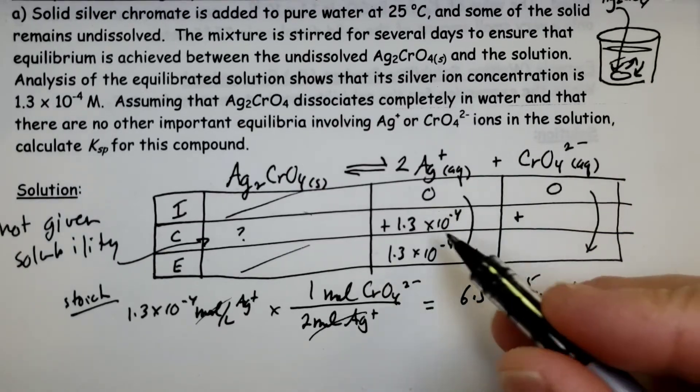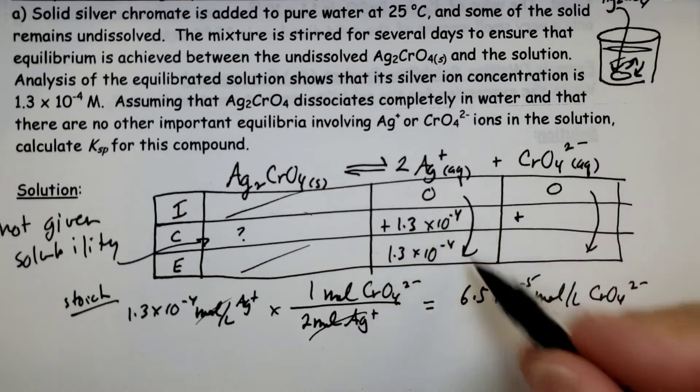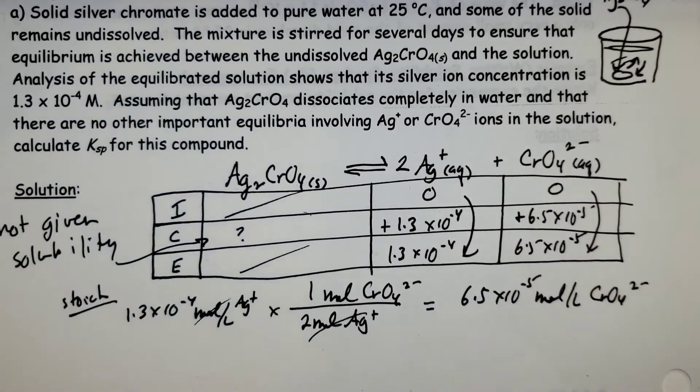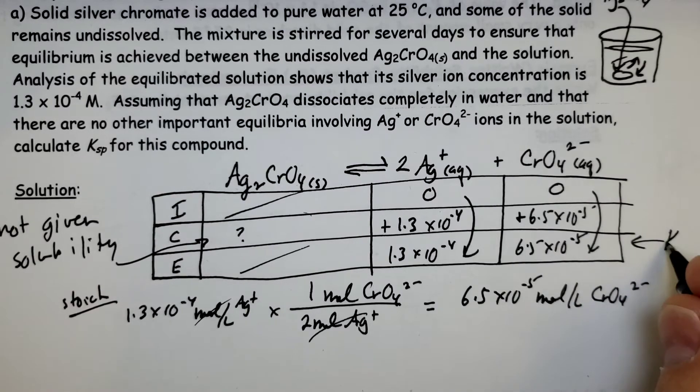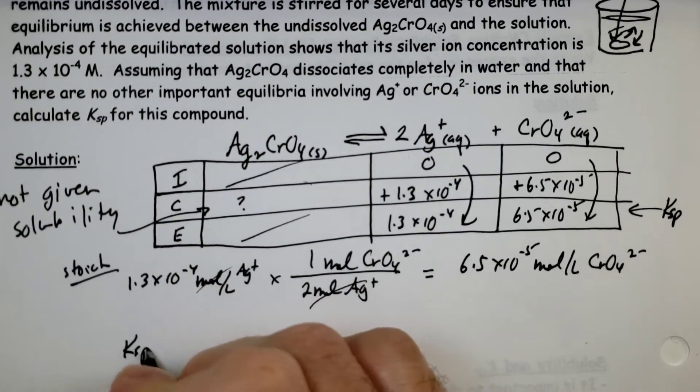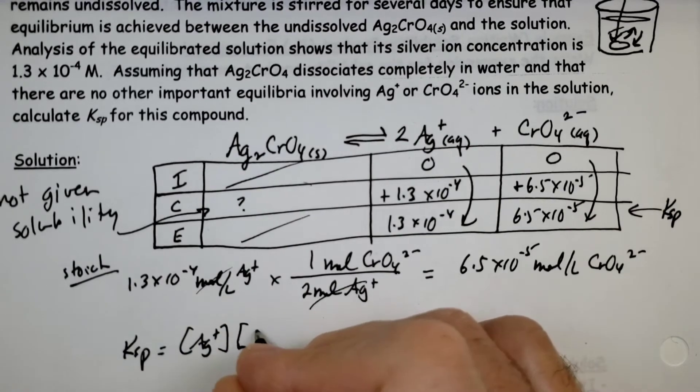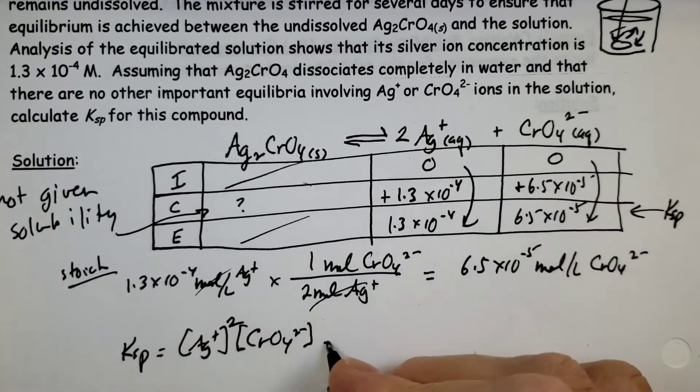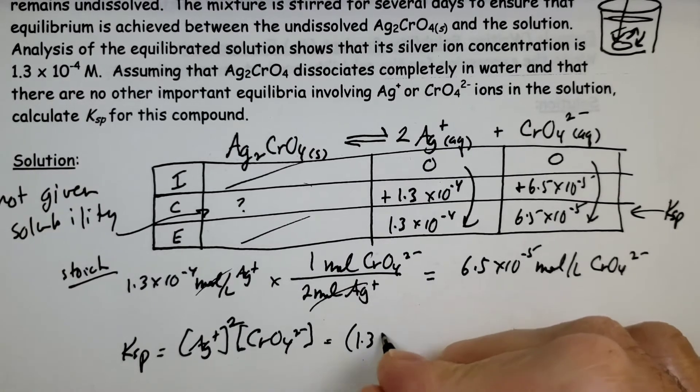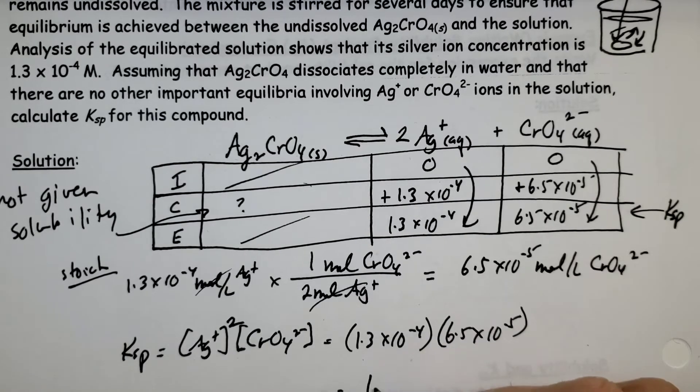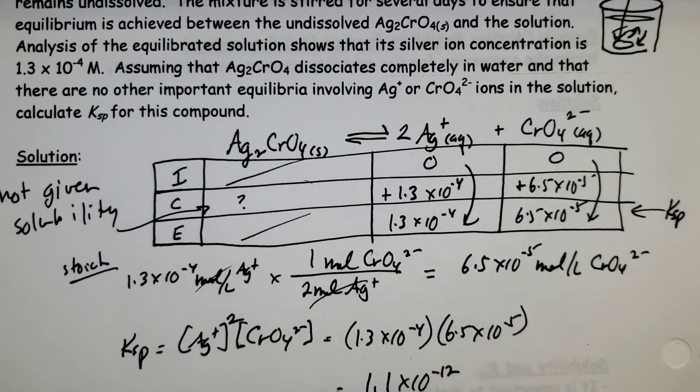You can see that this number is half as much because it's really 0.65 times 10 to the minus 4. But to put it in proper scientific notation, we move the decimal over. 6.5 times 10 to the minus 5. There we go, so we have this and that's going to be going into the Ksp expression because it's the equilibrium amounts. Ksp equals silver ions multiplied by chromate ions. And of course, we have 2 silver ions for every 1 chromate, so that's going to be an exponent of 2. We'll have 1.3 times 10 to the minus 4 squared times 6.5 times 10 to the minus 5. That's going to give us 1.1 times 10 to the minus 12.